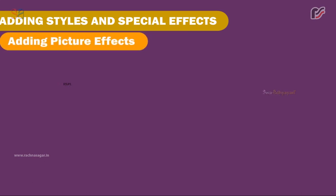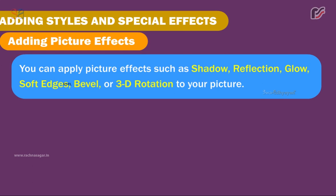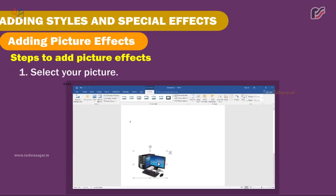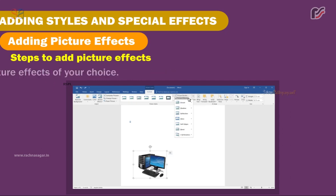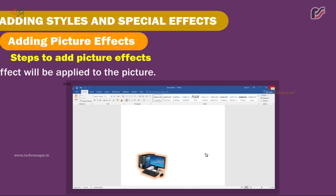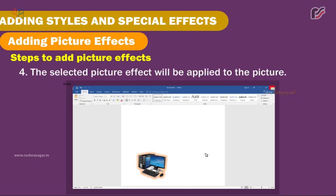Adding Picture Effects. You can apply picture effects such as shadow, reflection, glow, soft edges, bevel, or 3D rotation to your picture. Steps to add picture effects: 1. Select your picture. 2. Click Picture Effects in the Format menu. 3. Select the picture effect of your choice. 4. The selected picture effect will be applied to the picture.